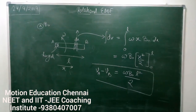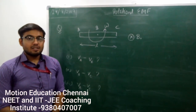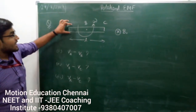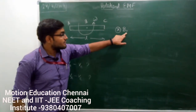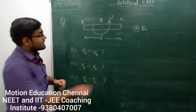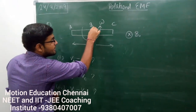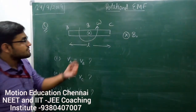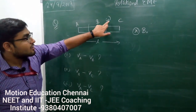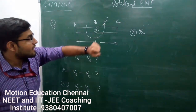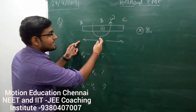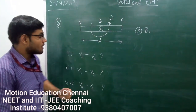So let's do a question regarding rotational EMF. We have a rod kept in a constant magnetic field B₀ directed inwards. The hinged point B is in the middle of the rod. This rod is rotating with a constant angular speed of omega. The complete length of the rod is L, and the hinge is exactly in the middle of the rod.